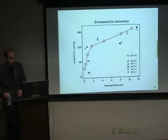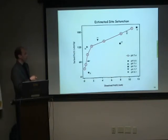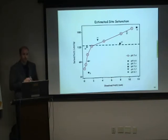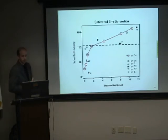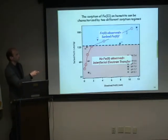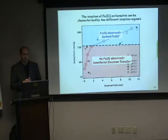Back to the isotherm — we found a few other pieces of information. We noticed a bend in the isotherm indicating two different sorption regimes based on this macroscopic data. This bend also occurs at the estimated site saturation — there are a certain number of reactive sites on these iron oxides, and if one iron atom reacts at one site, then the whole number of reactive sites becomes saturated. Those Fe2+ doublets appeared only in points beyond the surface site saturation. For all conditions above site saturation, we see this surface Fe2+ species; below it, we saw only Fe2+ being oxidized to Fe3+ and forming hematite.